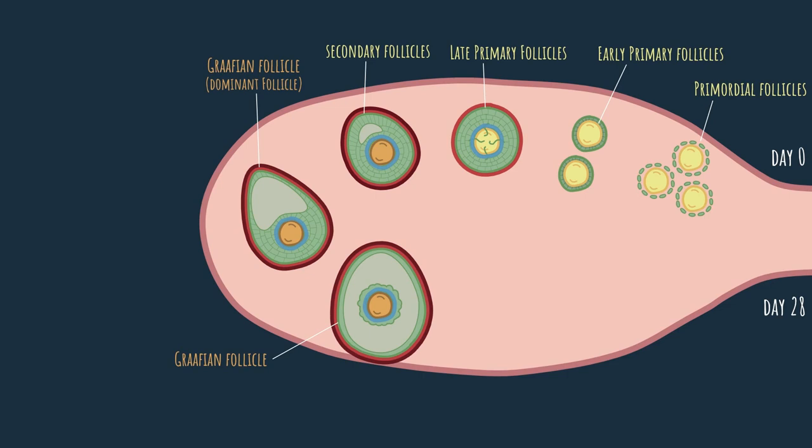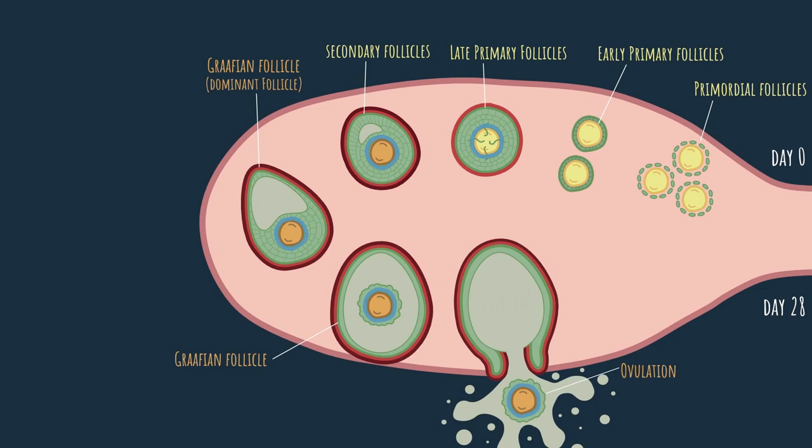Soon after the detachment, ovulation happens. The follicle ruptures and allows the oocyte to be ejected from the ovary. And in order to help the ejection of the oocyte, the ovary itself, as well as the theca externa, contract and give it a little push. Once the oocyte is out of the ovary, with the help of these tentacle-like fimbria, which you can see here, it enters the fallopian tube, where it potentially can be fertilized.